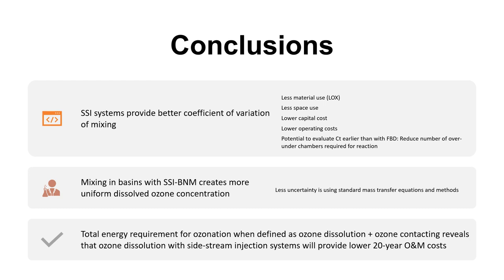To conclude, side stream injections generally provide a much better coefficient of variation of mixing. There are papers out there that list this, which results in less material use of LOX, which is crucial, less space use for LOX storage as well as the overall side stream injection itself, lower capital costs and O&M costs, and the potential to look at CT earlier. In basins using side stream injection with jet nozzles generally creates much more uniform dissolved ozone concentration and total ozone concentration. Total energy requirement for ozone applications when defined as ozone dissolution plus ozone contact reveals that ozone dissolution with side stream injection system can provide lower 20-year O&M costs with really good design aided by CFD.